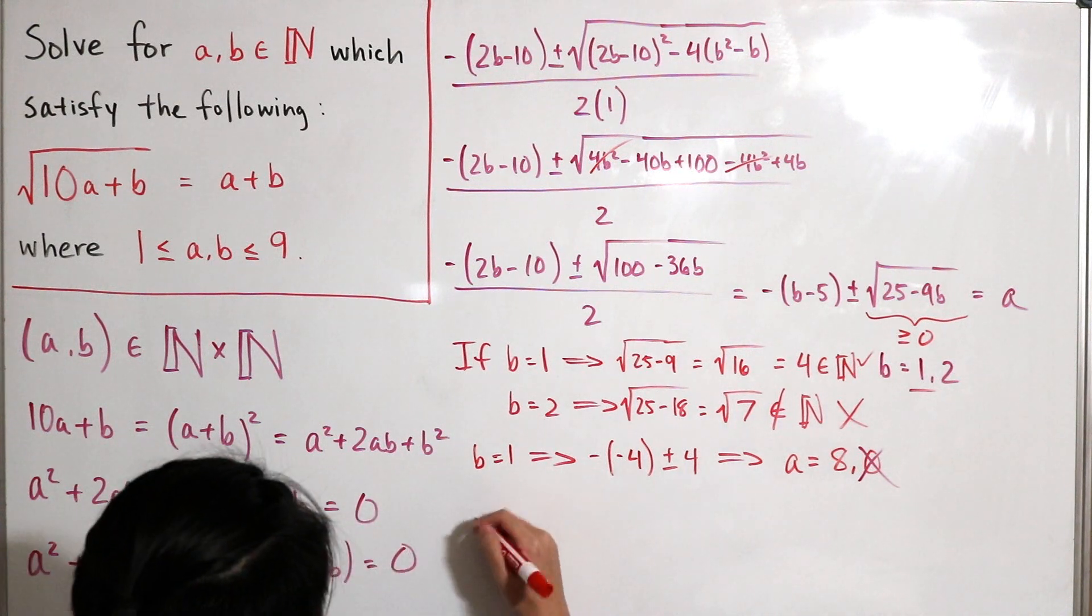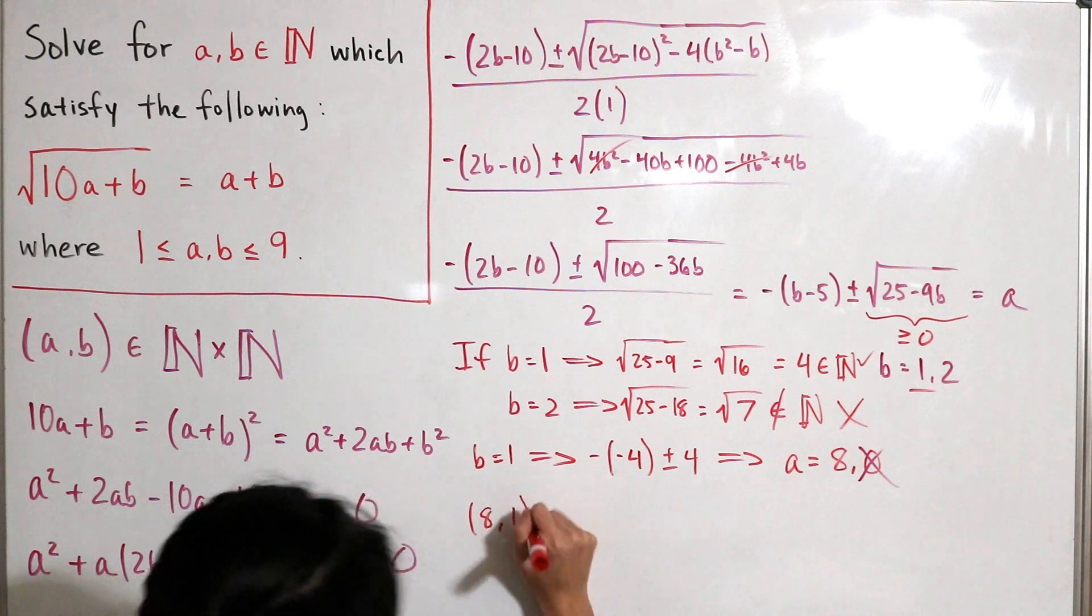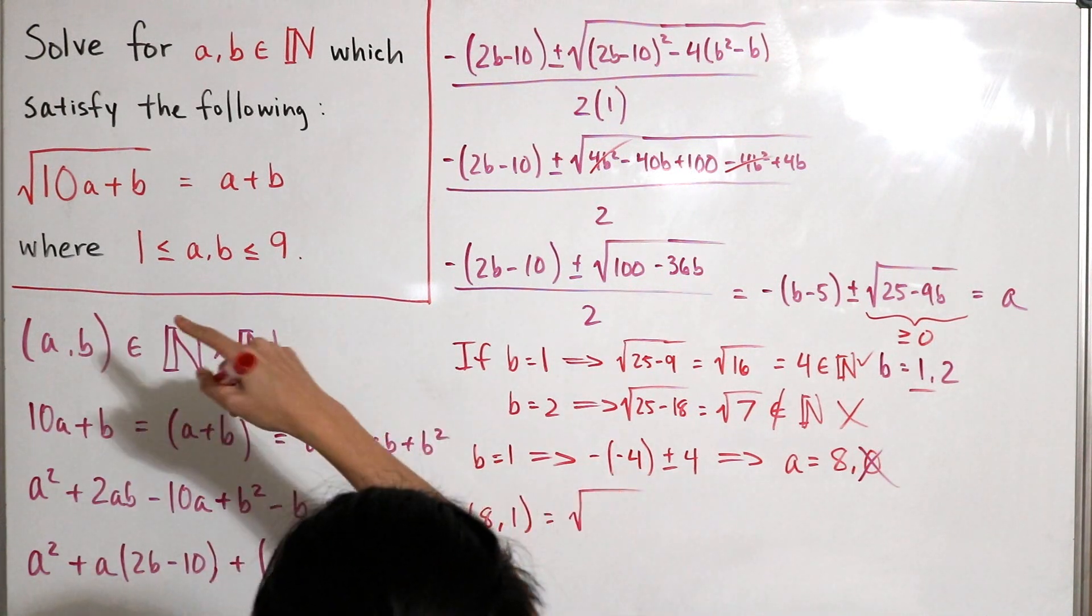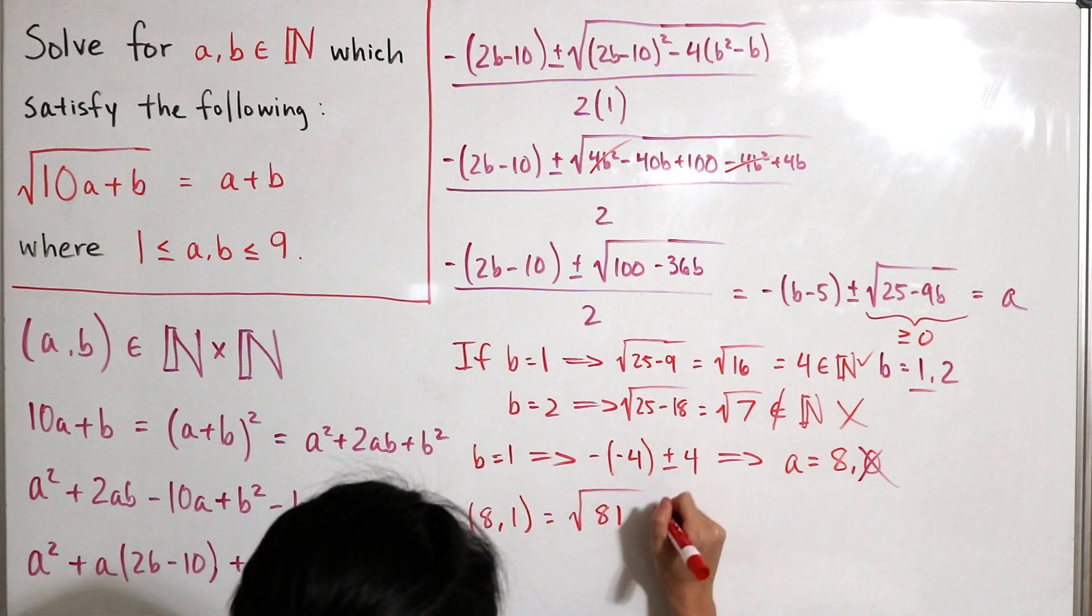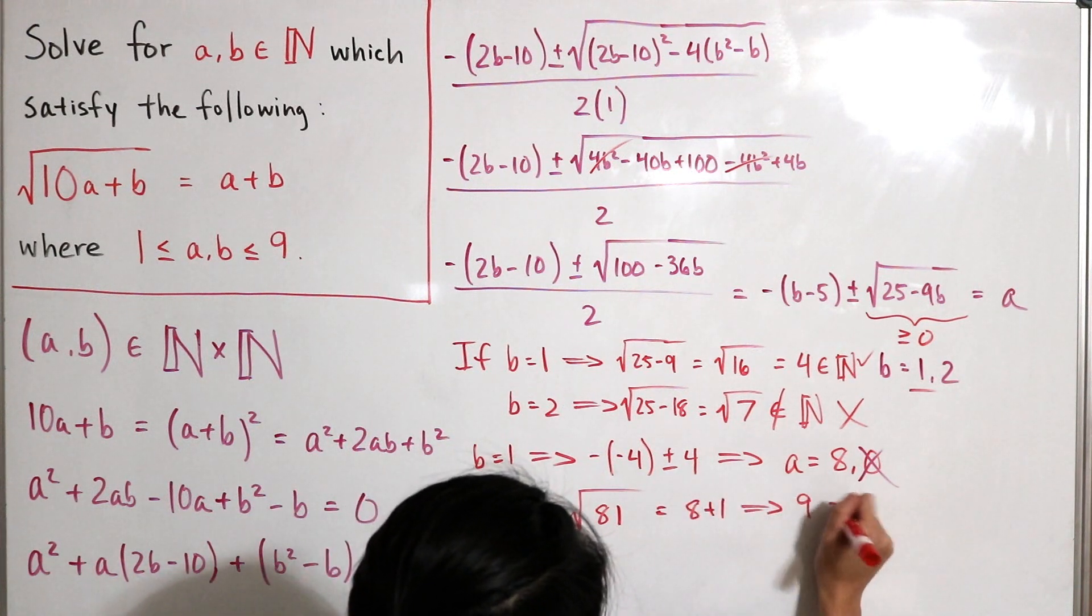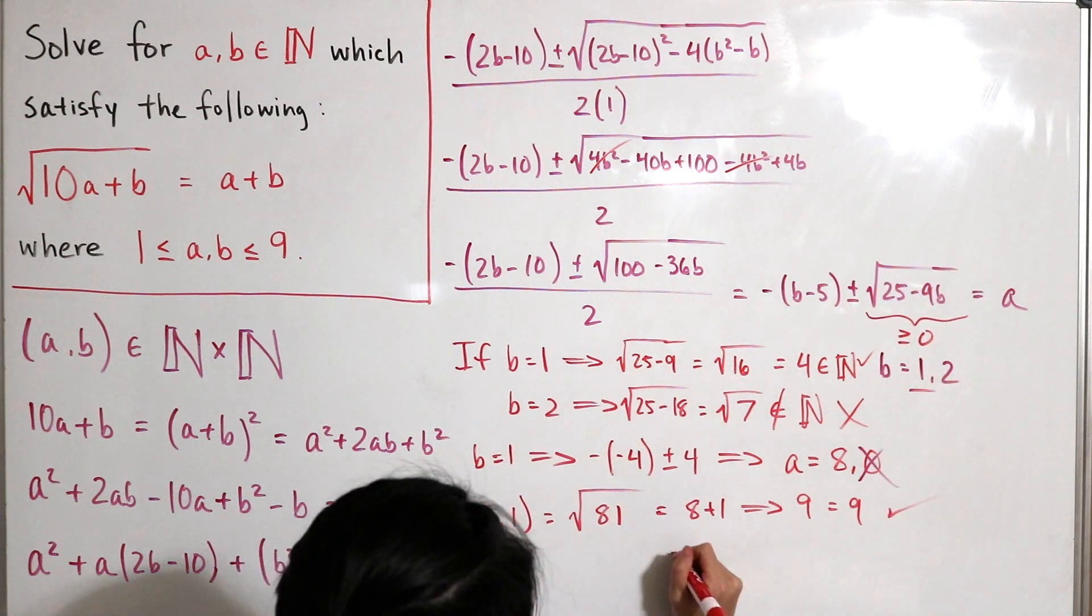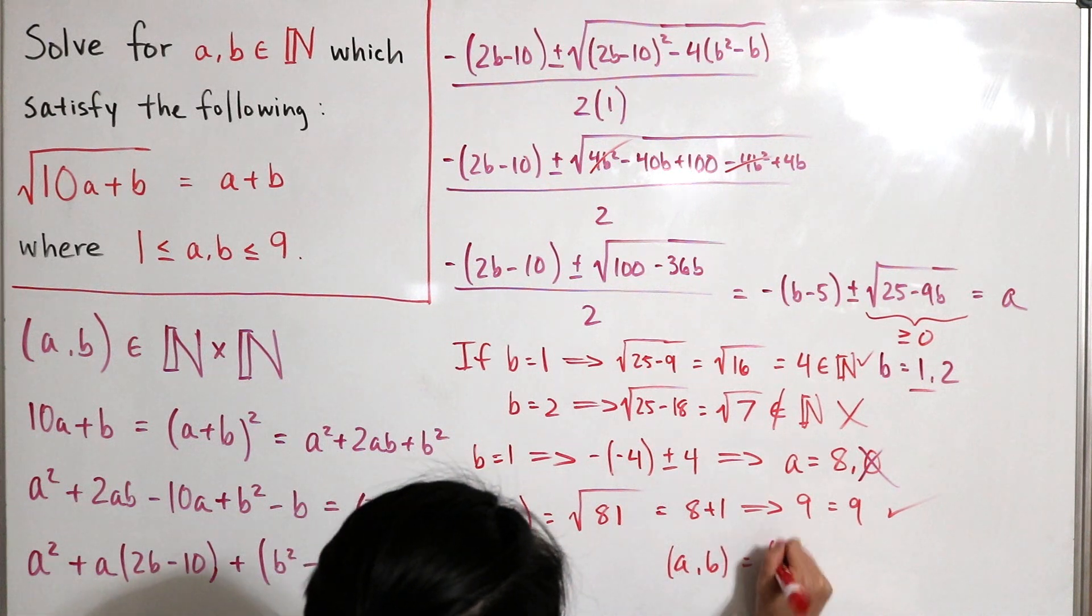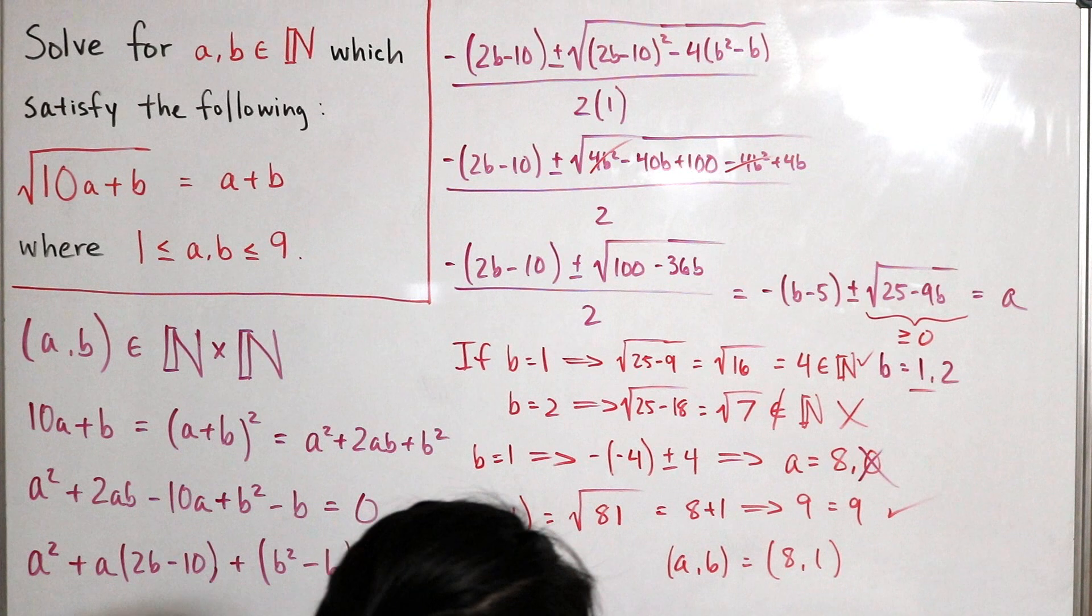But let's actually check that out and make sure that it actually does satisfy the equation. So we plug 8 for a and 1 for b. Then we plug this back in, so we have the square root of 10 times 8, so that's 80 plus 1 is 81, equals a plus b. So 8 plus 1, which shows that 9 equals 9. And that checks out. And so therefore, the only solution for the order pair a and b is equal to 8 comma 1.